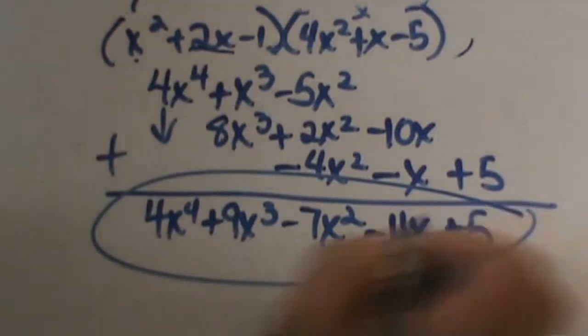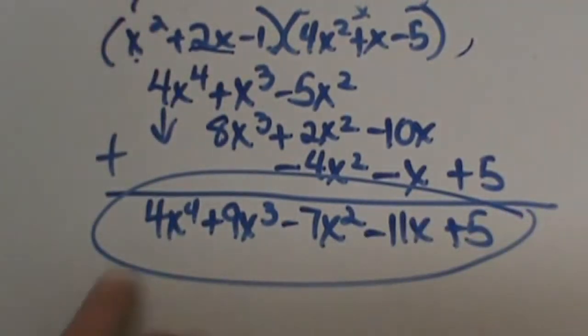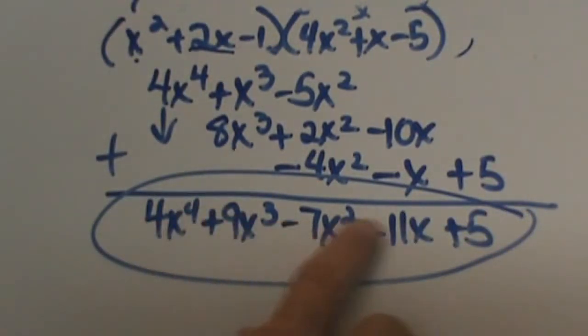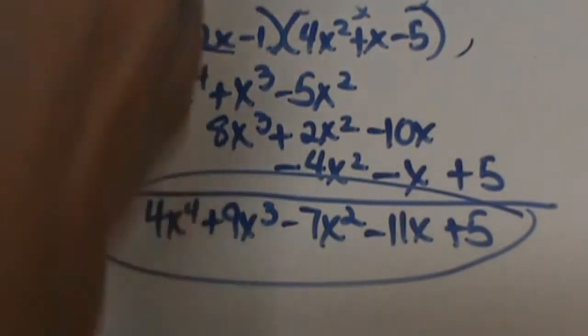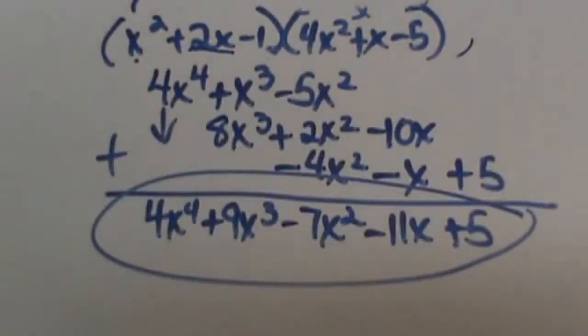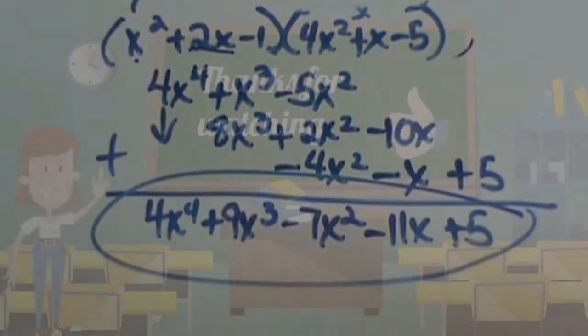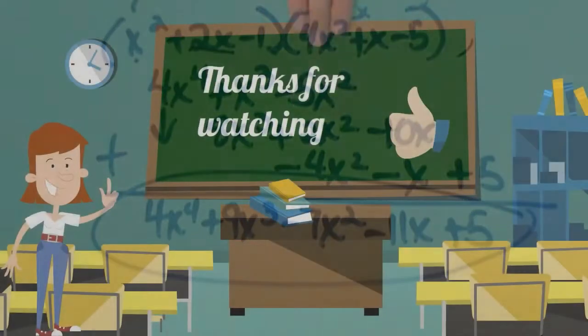So a trinomial times a trinomial gives me 1, 2, 3, 4, 5 terms. That's a lot. But if you line them up it really does make it a little bit easier.